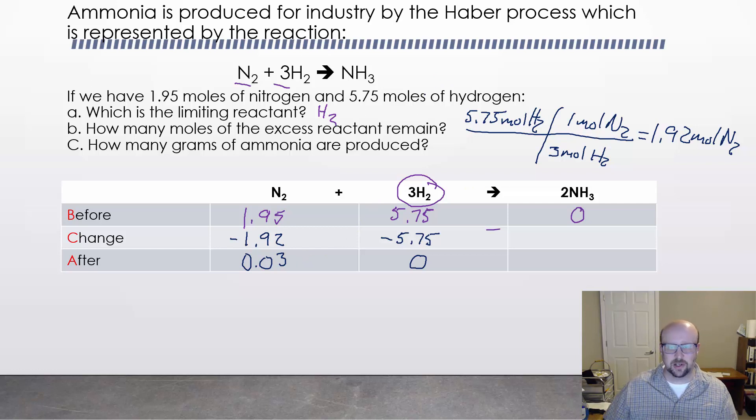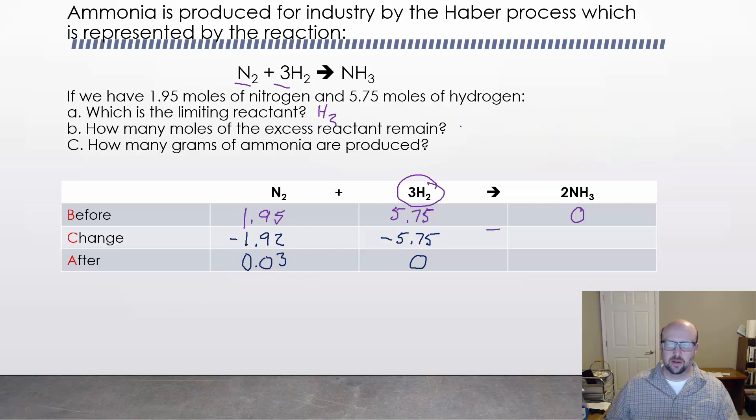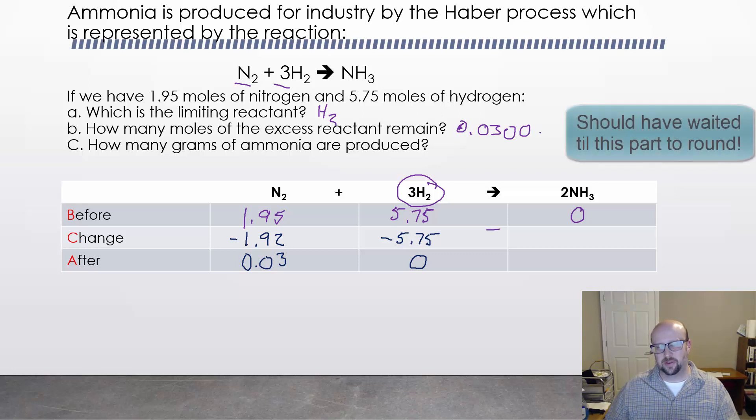Now that's important for us because our second question asked us how much of the excess reagent was left over. And again we could have calculated that with a normal stoichiometry problem, but now everything's in this nice organized fashion. I know that I ran out of hydrogen. That's my limiting reactant. I know that I have this much of N2 left, so I can answer that question now. So we know that we have 0.03 moles of nitrogen.